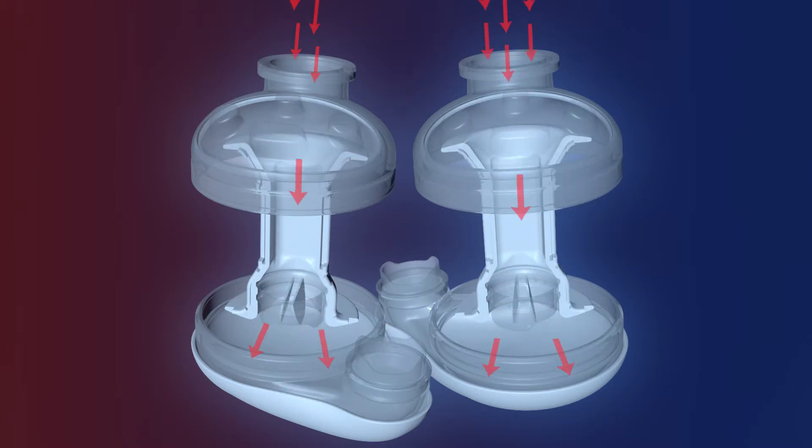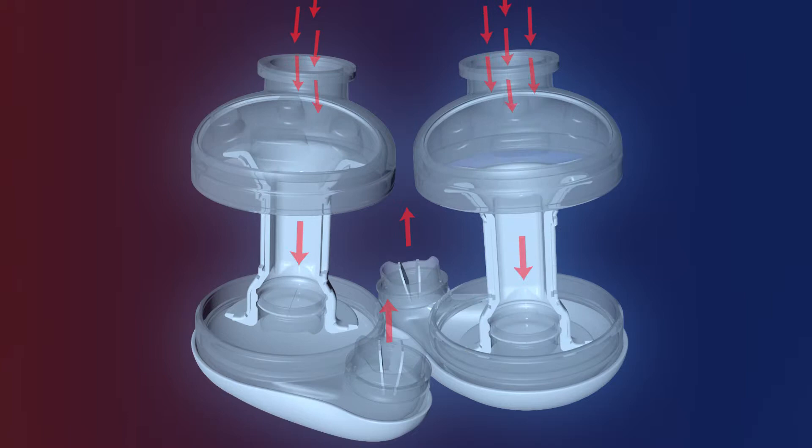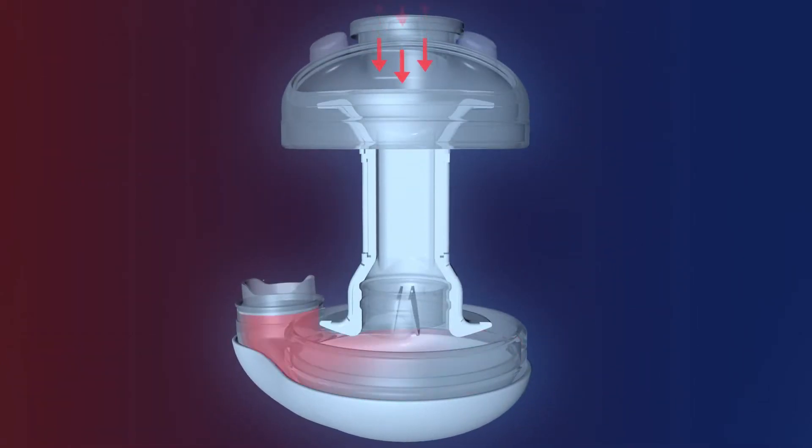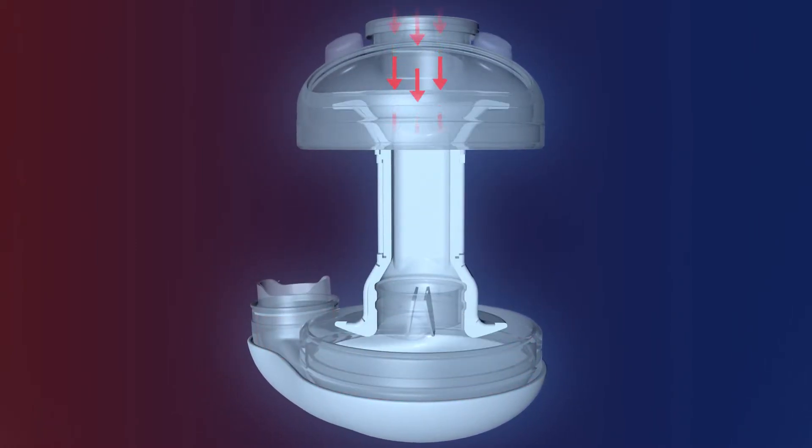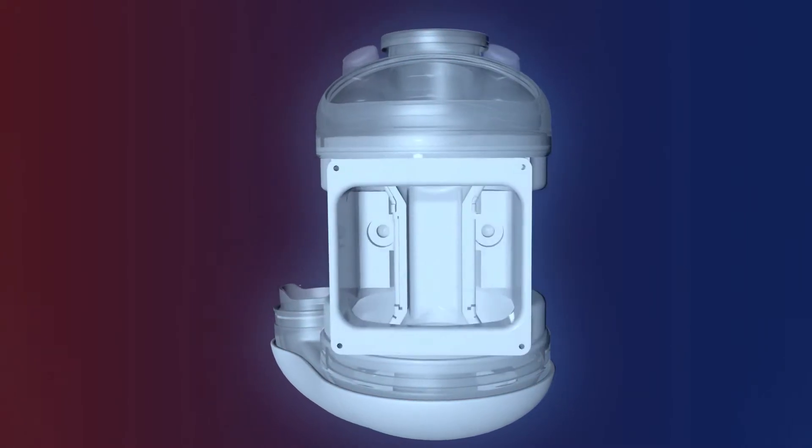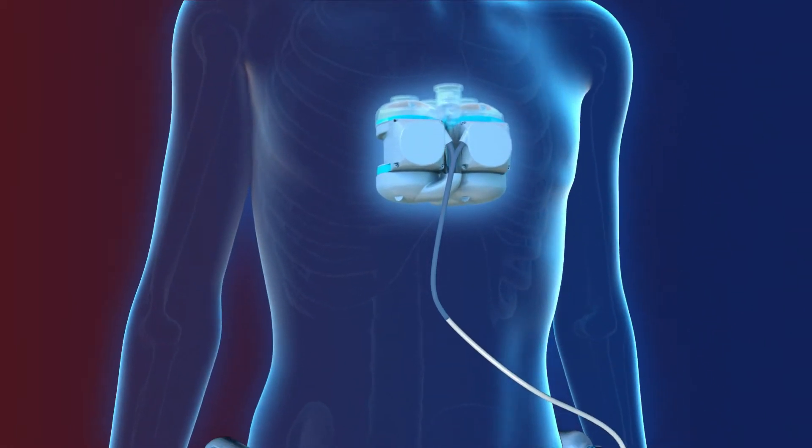Realheart TAH pumps blood to the lungs from the right side pump and the rest of the body from the left side pump. This is done simultaneously in a synchronized manner. This construction allows blood to continuously flow into the atrium while being pumped out in pulses from the ventricle, just like in a human heart.